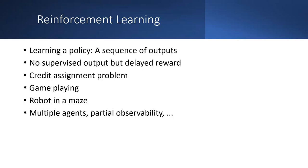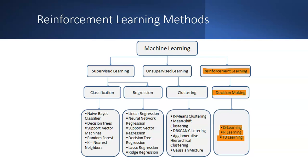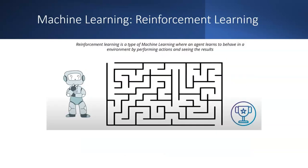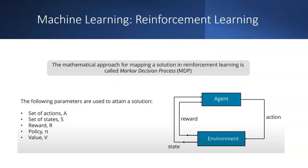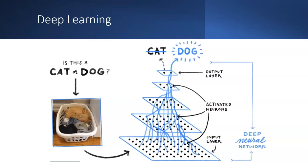Reinforcement learning involves learning a policy — a sequence of outputs with no supervised labels — and addresses the delayed credit assignment problem, gaming problems, reward in a maze, multiple agents, and partially observable environments. Key notation includes: set of actions A, set of states S, rewards R, policy π, and value V. The reward and punishment system defines how the agent learns.